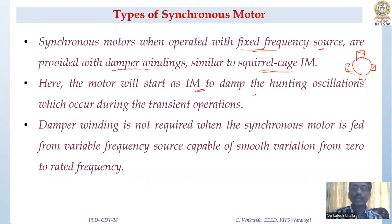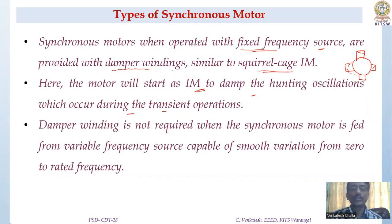The motor will start as an induction motor to damp the hunting oscillations which occur during transient operations. The damper windings provided in the rotor act like a squirrel cage type rotor and provide torque. The motor picks up speed, and once it comes near synchronous speed, the field winding is also excited. Damper windings are not required when the synchronous motor is fed from a variable frequency source.